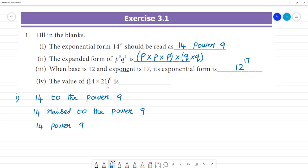The value of 14 multiplied by 21, the whole to the power 0. So fourth one, we have the criteria: anything to the power 0 is 1 except 0.